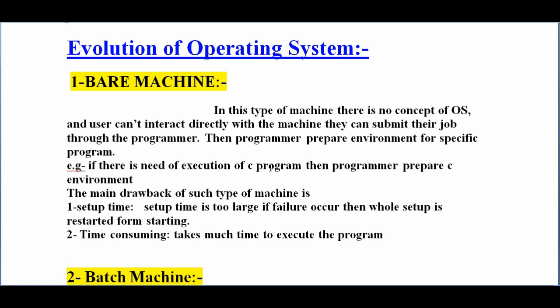The programmer creates the environment so that the user can perform a particular task. The programmer prepares the environment for a specific program. For example, if there is a need to execute a C program, the programmer first prepares the C programming environment where the user can easily execute their work. But the main drawback of such type of operating system is setup time — setup time is too large. If a failure occurs, the whole process starts from the beginning.